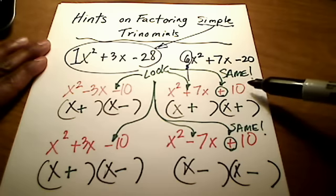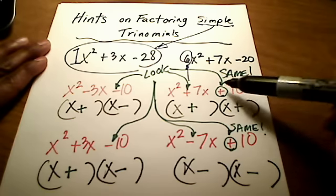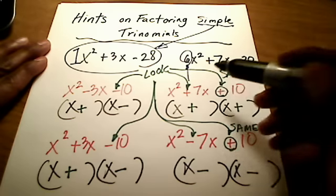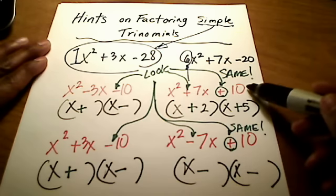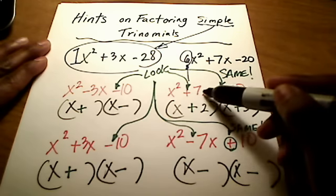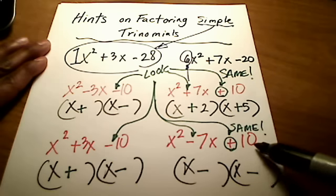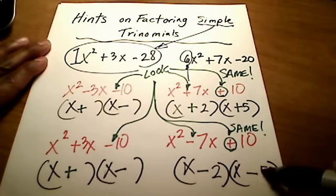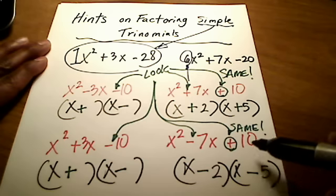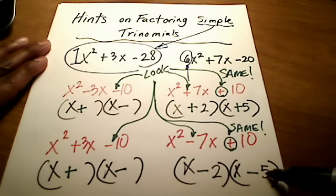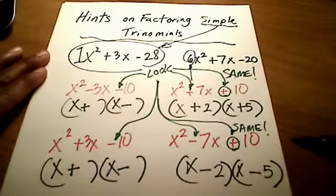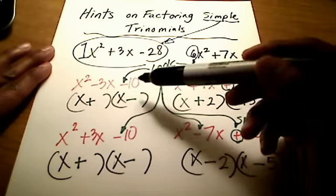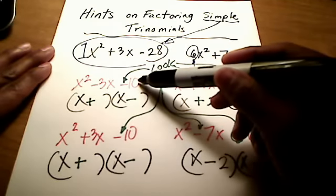What two numbers will multiply to get you 10, but add to get you 7? That's 2 and 5. Think about it: 2 times 5 gives you 10, and 2 plus 5 gives you 7. Same idea here: negative 2 times negative 5 gives you positive 10, and negative 2 added to negative 5 gives you negative 7. I'm also going to use 2 and 5 to get to 10 in the next cases.